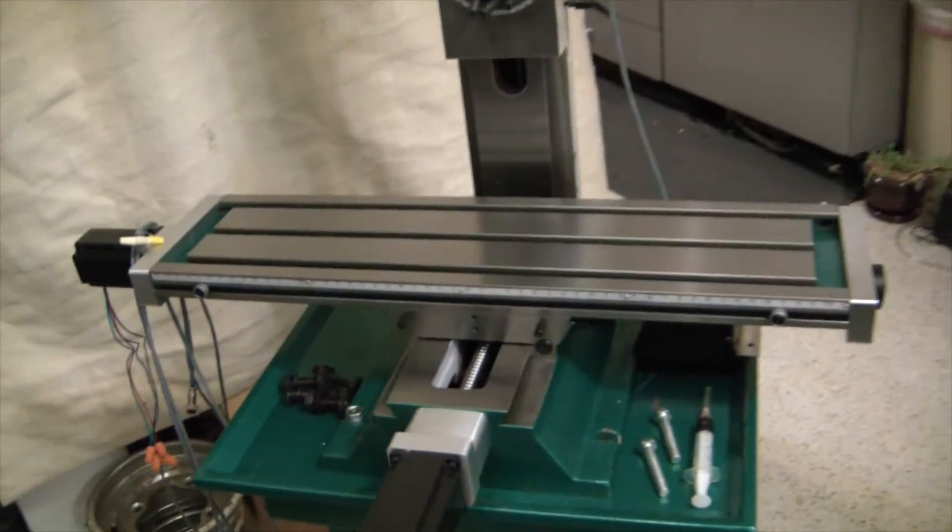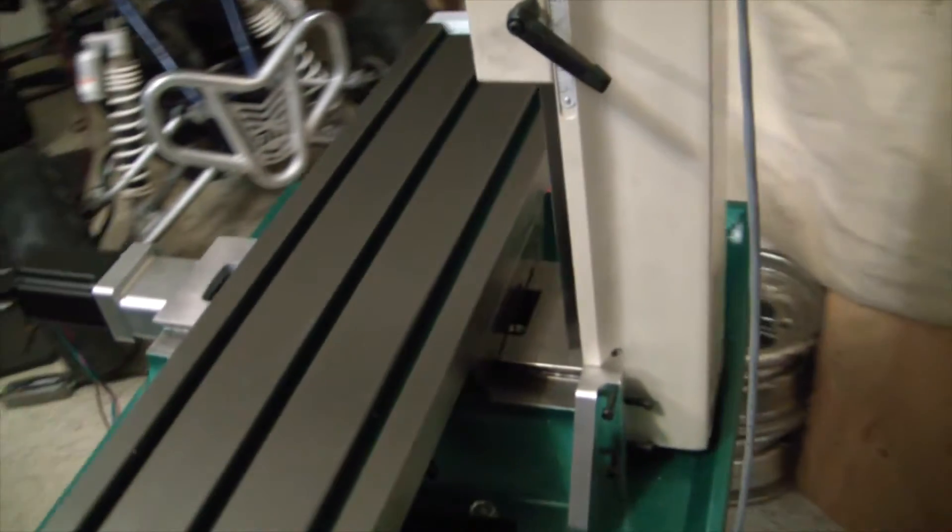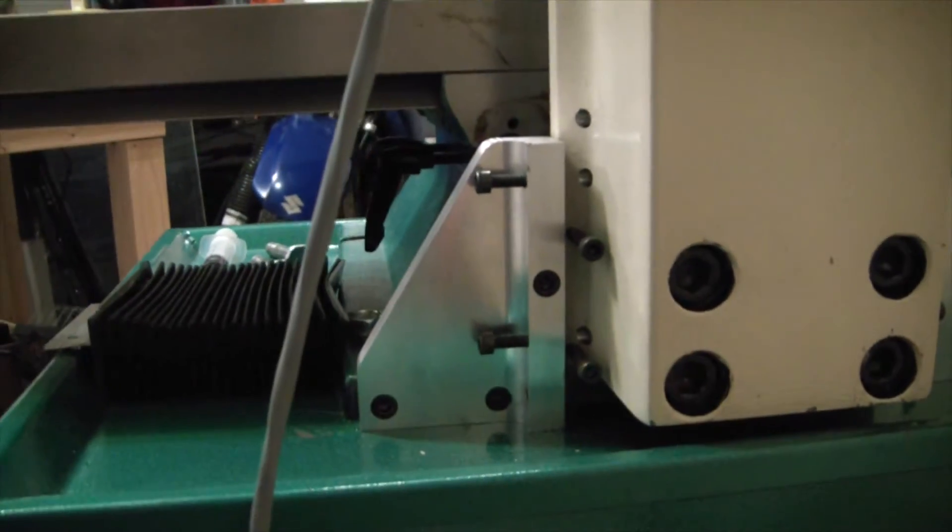Hey YouTube, this is the Elemental Maker and today I'm going to show you a pretty cool modification I did on the G0704 CNC milling machine. That'll make tramming a whole lot easier.